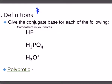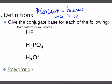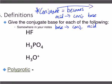So we talked about it yesterday and started looking at conjugate pairs. We're going to continue with that today. Jot this in your notes: the way to think about conjugate is that it means 'becomes.' An acid becomes the conjugate base, and a base becomes the conjugate acid. You will only ever see the term conjugate on the product side — conjugate will never be on the reactant side of your reaction.